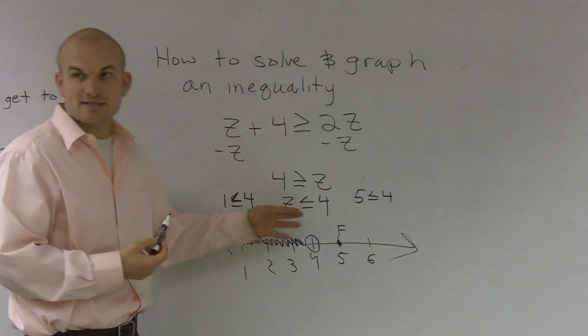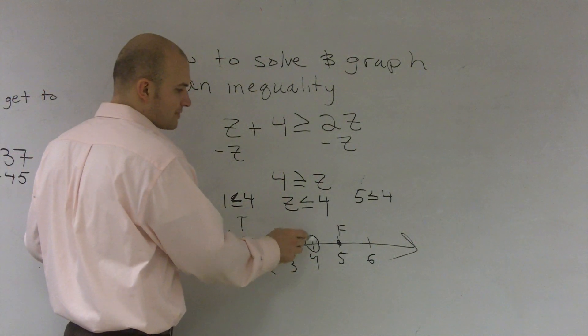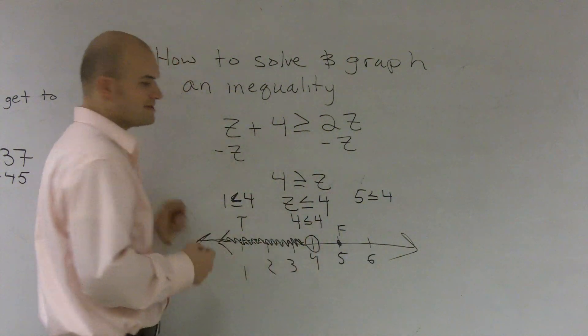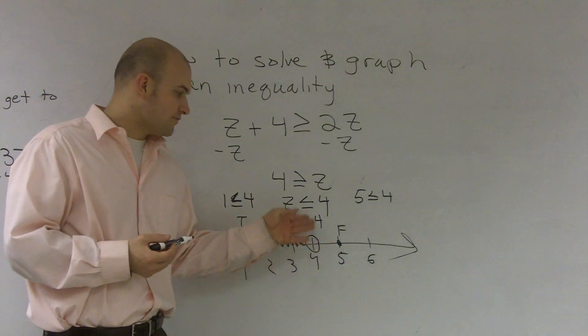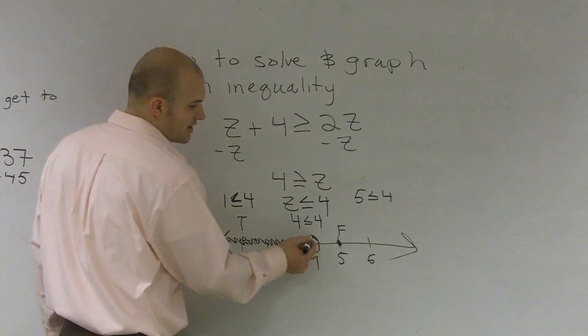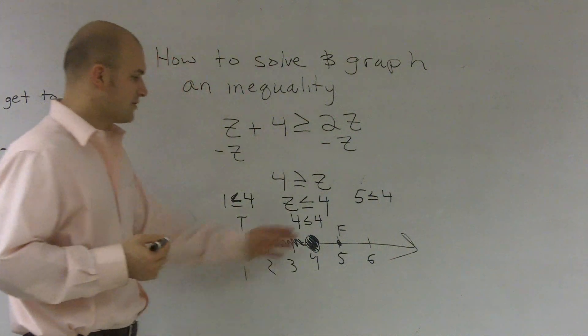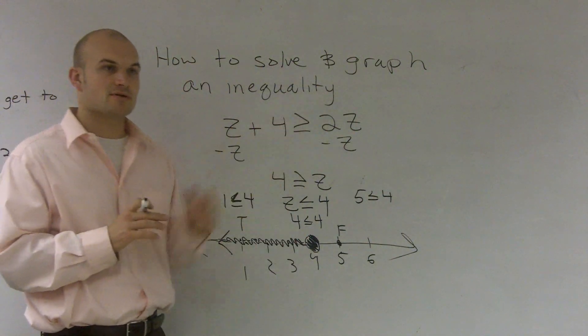The last thing we need to do is we need to test our final point. I'm going to test my final point, which is 4 is less than or equal to 4. Is that true or false? Since 4 is equal to 4, since it's equal to, we're going to fill in our point. If it would have been false, I would have left that open. That's how you solve and graph an inequality when you have variables on both sides.